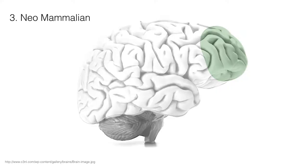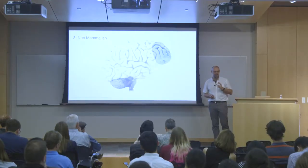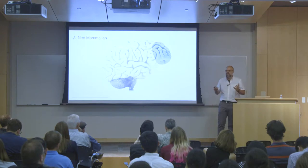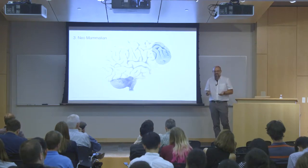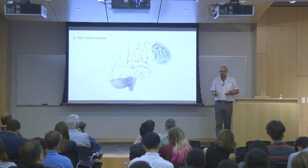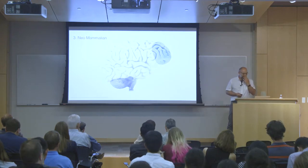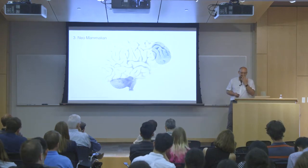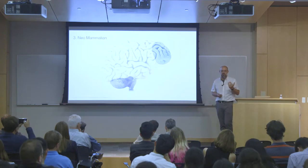Then there's the neomammalian brain. I was talking to a neurosurgeon friend of mine — he said, two tablespoons. That's what this is. He looks at this stuff all the time, which is kind of amazing to talk to someone who looks at the neocortex fairly frequently. This is where a lot of the creativity happens. This is where our humanness happens.